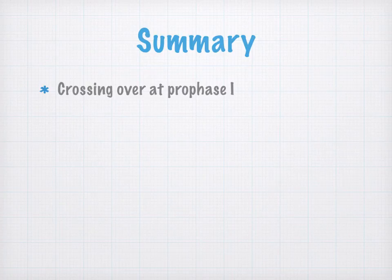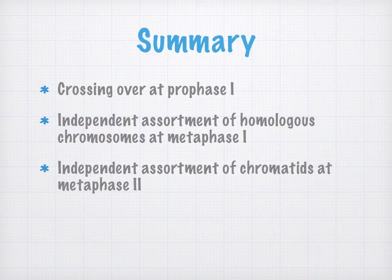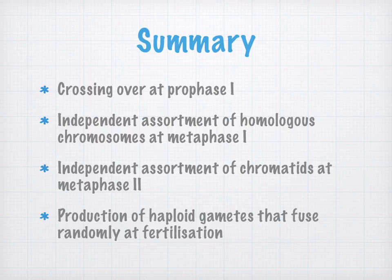In summary, meiosis brings about variation by: crossing over at prophase I, independent assortment of homologous chromosomes at metaphase I, independent assortment of chromatids at metaphase II, and the production of haploid gametes that fuse randomly at fertilization. It's a good idea to jot down these four points. That concludes our lesson.